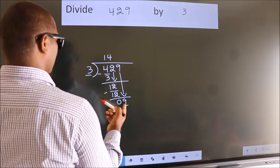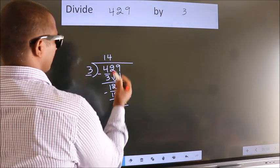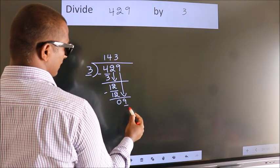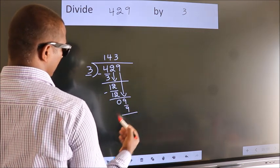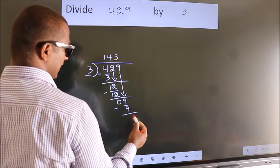When do we get 9? In 3 table, 3 3s 9. Now, we subtract. We get 0.